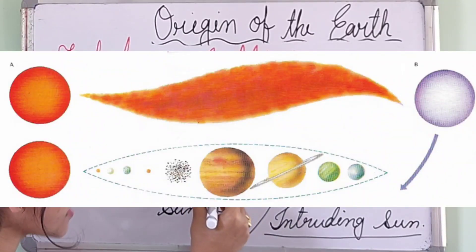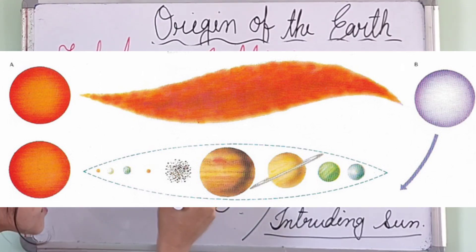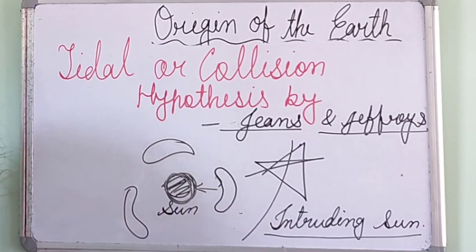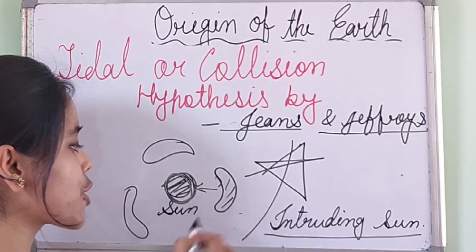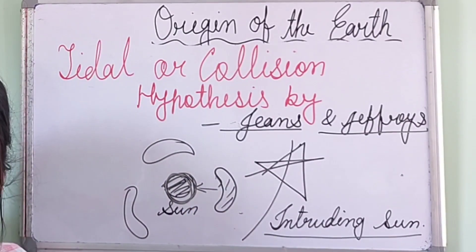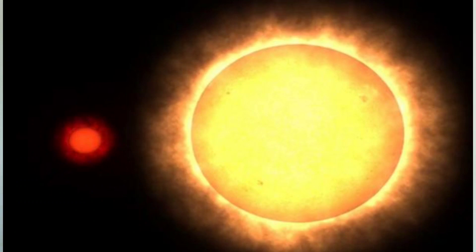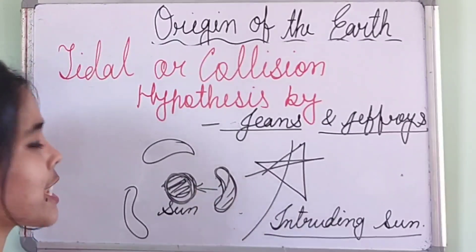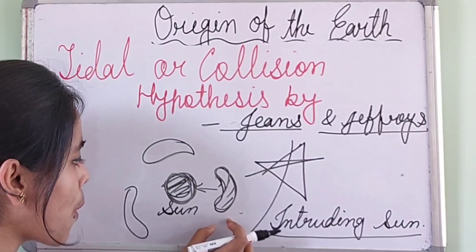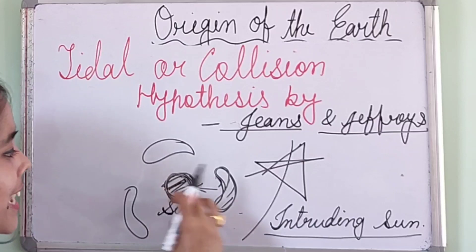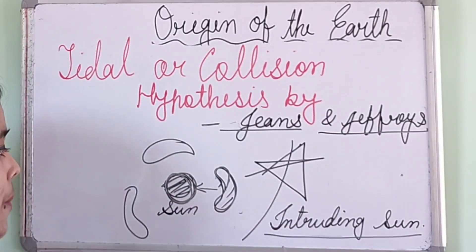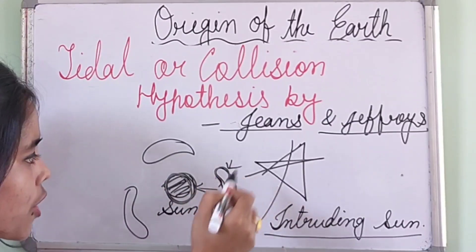From the original sun, one tongue-shaped matter came out and started revolving around the sun. Due to rotation, revolution, and gravitational attraction, this cigar-like structure could not go back to the sun. Since the sun was a gaseous mass, this tongue-shaped structure was also gaseous — it is a part of the sun. As this gaseous mass revolved around the sun, the cooling and solidification process began to work on it.